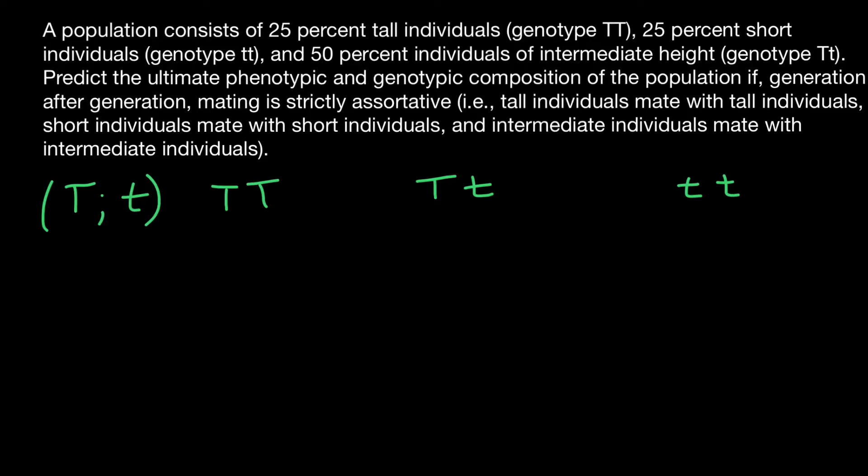The allele which is dominant specifies tall phenotype. The one which is recessive specifies short phenotype, and the intermediate or heterozygous genotype specifies intermediate genotype and phenotype.